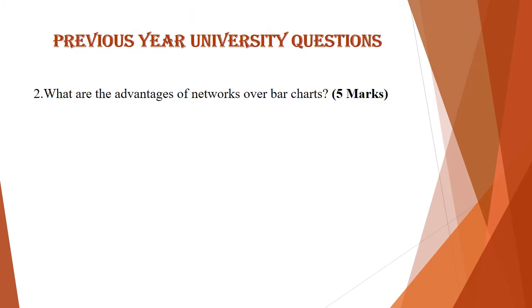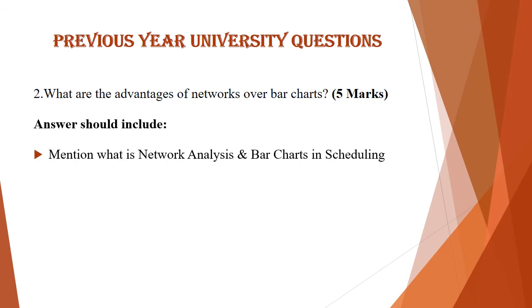The second question is: what are the advantages of networks over bar charts? This is asked for 5 marks. We know that network analysis and bar charts are two different methods used for scheduling — both are graphical representations. Bar chart is also known as GAN chart; it was introduced by Henry GAN. Your answer should mention what network analysis and bar charts are, their importance in scheduling, and then list out any 5 or 6 advantages of network analysis over bar charts.